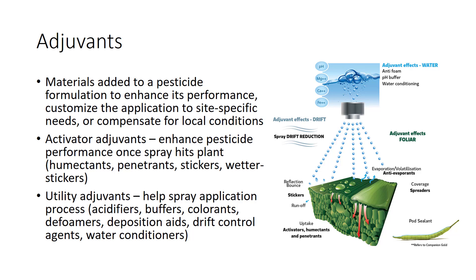Adjuvants are materials added to a pesticide formulation to enhance its performance, customize the application to site-specific needs, or compensate for local conditions. Formulation adjuvants are mixed with the pesticide active ingredient during packaging. Spray adjuvants are packaged separately and can be added to the spray mix before application. Spray adjuvants may act as activator adjuvants, which directly enhance pesticide performance once the spray hits the plant — including humectants, moisture retention promoters, penetrants, stickers, and wetter stickers — or as utility adjuvants, which help the spray application process, including acidifiers, buffers, colorants, defoamers, deposition aids, drift control agents, and water conditioners. A single adjuvant product can be both an activator and utility adjuvant.